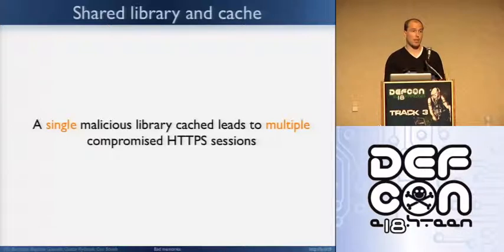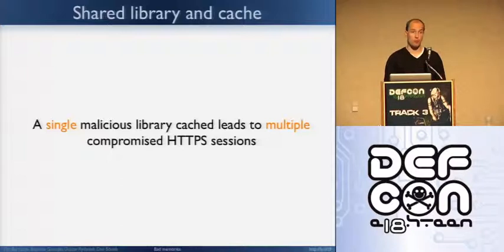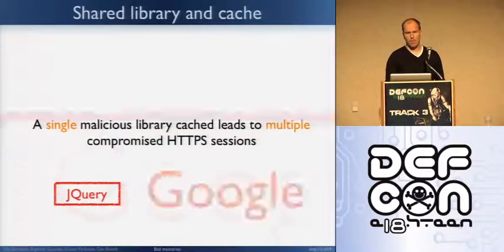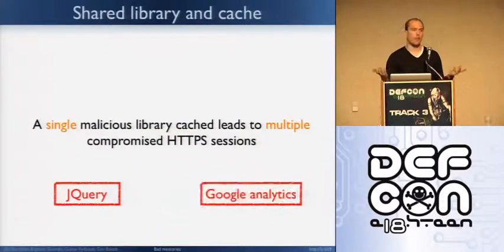jQuery over CDN, Google CDN, is used by many, many websites. So if an attacker is able to inject one of these libraries, it's going to compromise all of your HTTPS sessions. You might say, hey, there is a defense against that, right? What is the defense against this one?